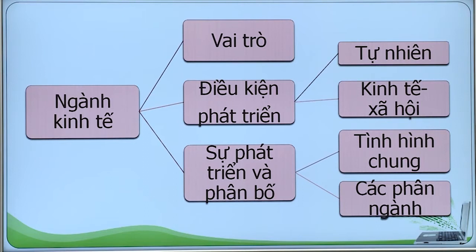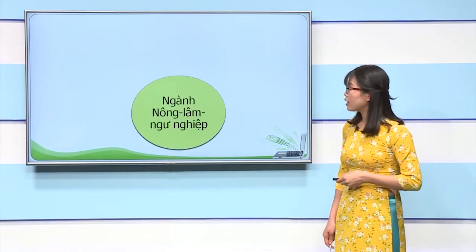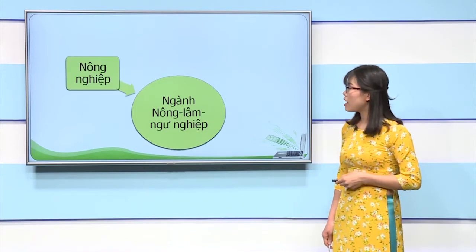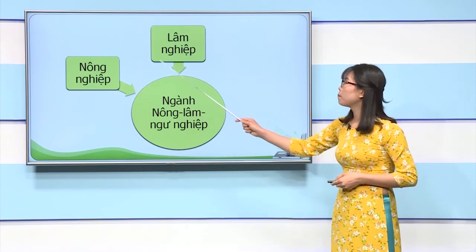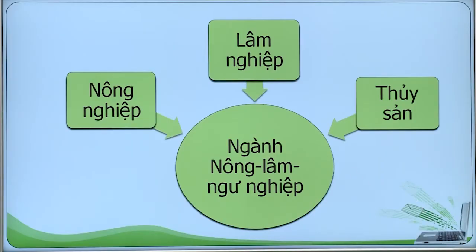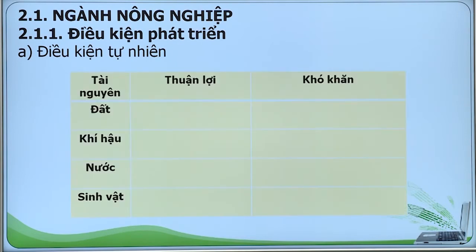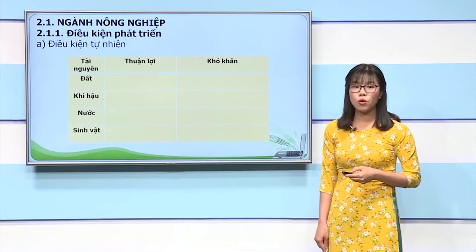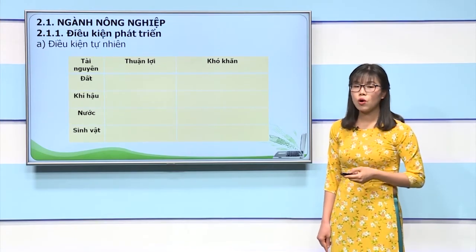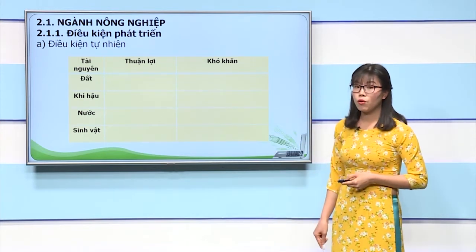Chúng ta đi vào tìm hiểu ngành kinh tế thứ nhất, đó là ngành nông, lâm, ngư nghiệp. Ngành nông, lâm, ngư nghiệp gồm 3 phân ngành chính: nông nghiệp, lâm nghiệp và thủy sản. Trước hết, chúng ta sẽ đi tìm hiểu về ngành nông nghiệp. Về điều kiện phát triển của ngành nông nghiệp - điều kiện tự nhiên - chúng ta cần phải phân tích được những thuận lợi và khó khăn của từng điều kiện tự nhiên đối với sự phát triển và phân bố nông nghiệp.